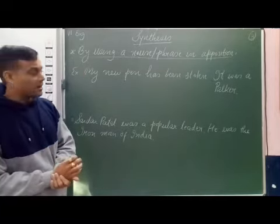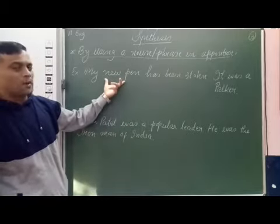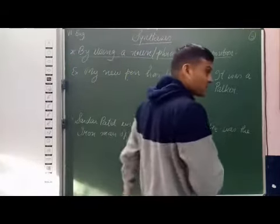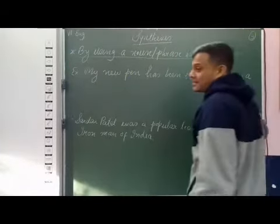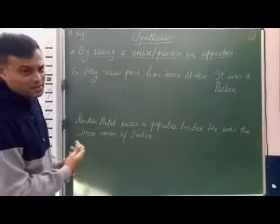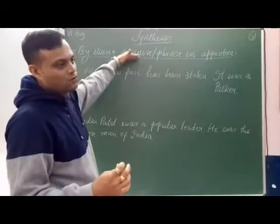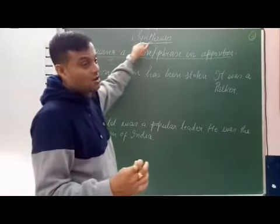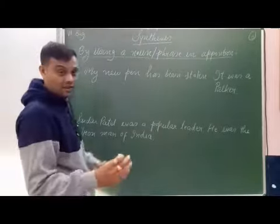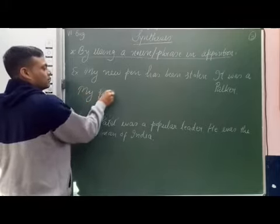Let's understand with two examples. 'My new pen has been stolen. It was a Parker.' Here we can see the subject of the first sentence is 'my new pen,' and the information about it is given in the second sentence — 'a Parker.' When such a condition is there, that time we have to use a noun phrase or a noun in apposition to combine two sentences.